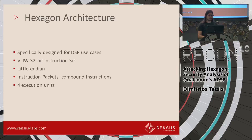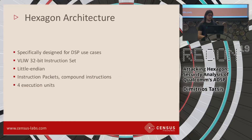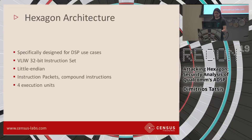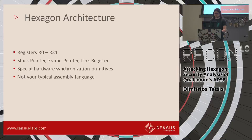A few things about the Hexagon architecture: it's specifically designed for DSP use cases. It's a Very Long Instruction Word 32-bit instruction set, it's little-endian, and it provides four execution units. You can think of it as four cores that run instructions in parallel with something called instruction packets. The architecture has general-purpose registers R0 to R31, where the last three registers are the stack pointer, frame pointer, and link register.